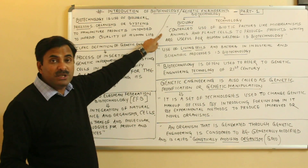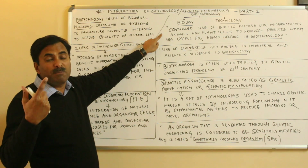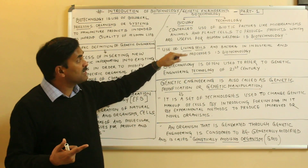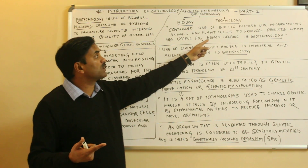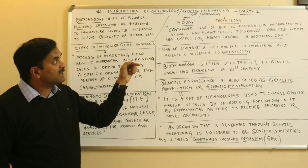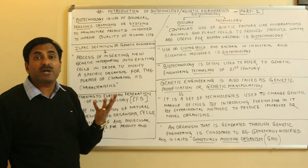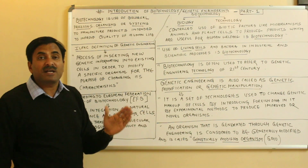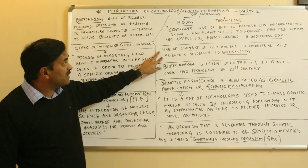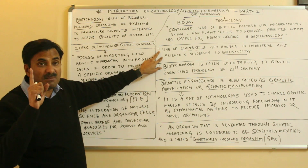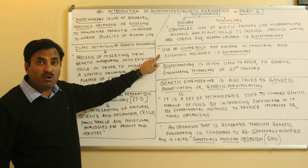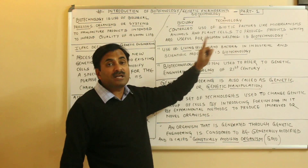We can also define biotechnology as: the controlled use of biotic components or living factors like microorganisms, animals, and plant cells to produce products which are useful for human welfare. You can see here that we are using the controlled use of biotic factors to produce products important for human welfare. Another definition is: the use of living cells and bacteria in industrial and scientific processes is also called biotechnology.